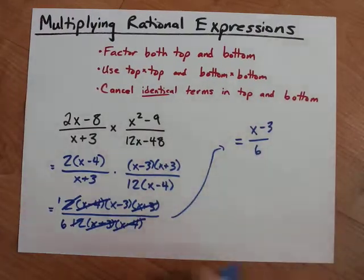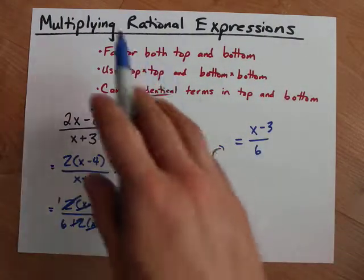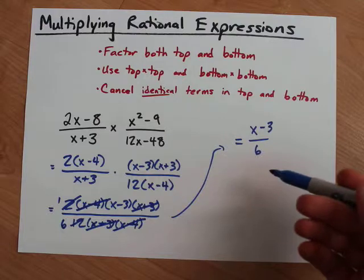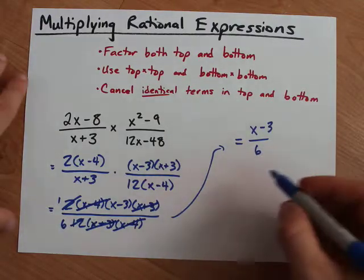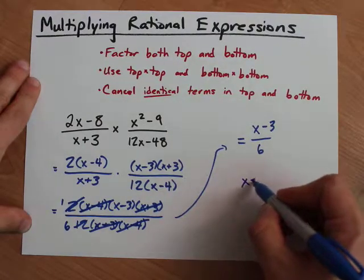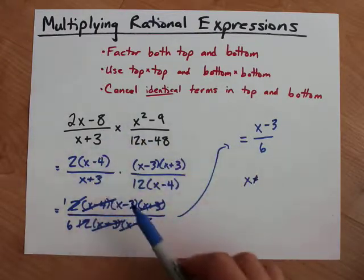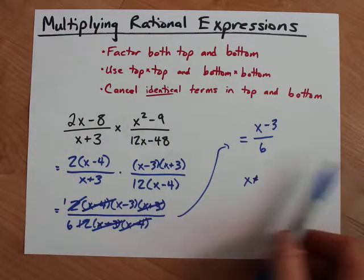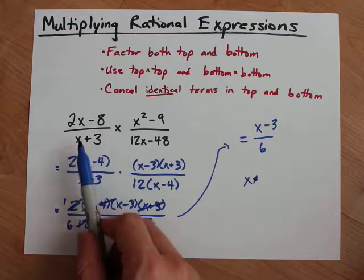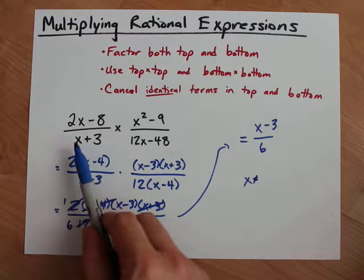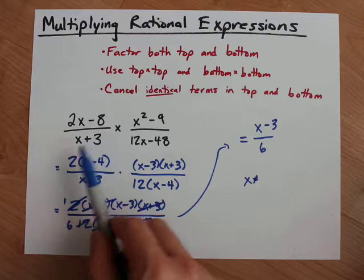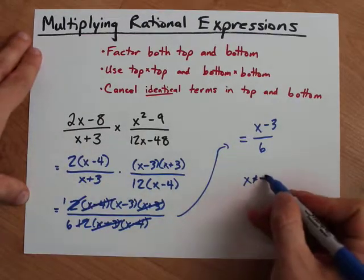That's it. This is the simplified or multiplied and simplified rational expression. I'm supposed to state restrictions. x is not allowed to be—and I have to look throughout and see what things ever appeared on bottom. Here, in the original, x could not have been -3. If x was -3, you'd be dividing by 0. And that's not okay.